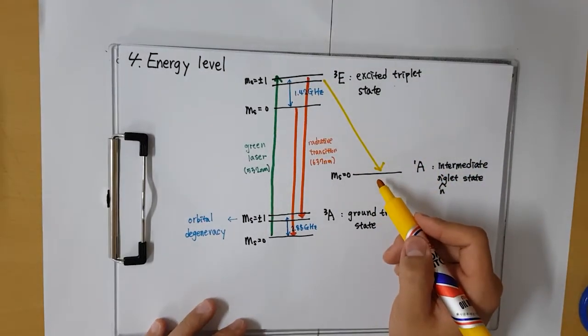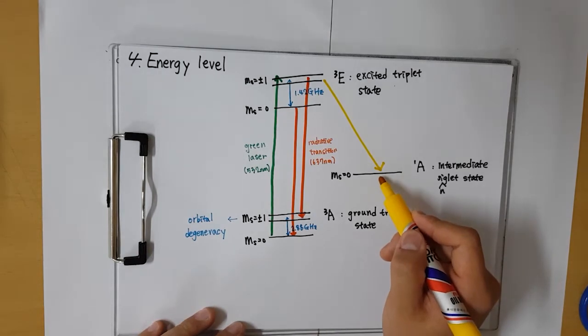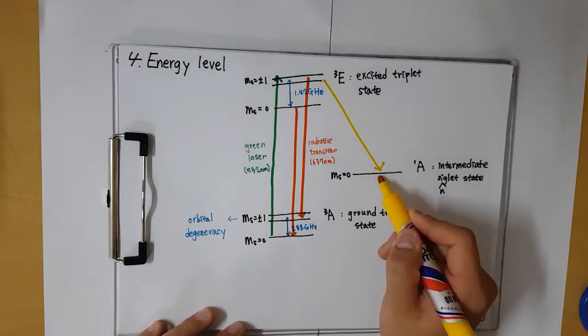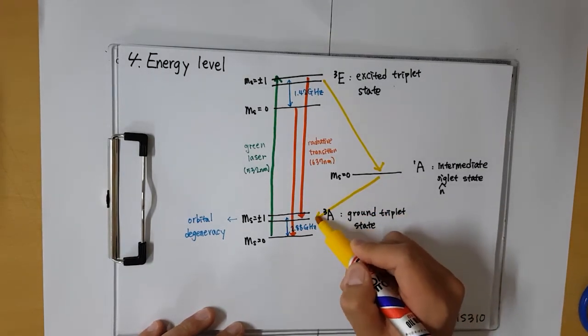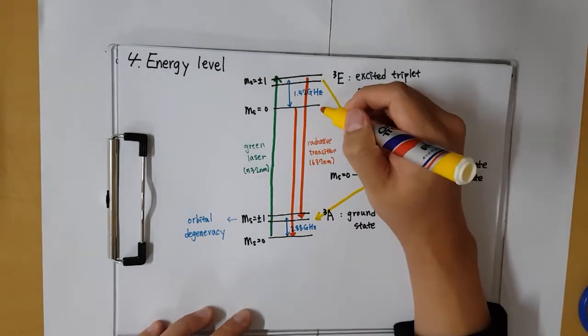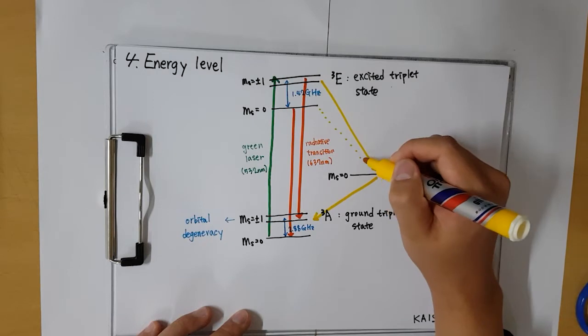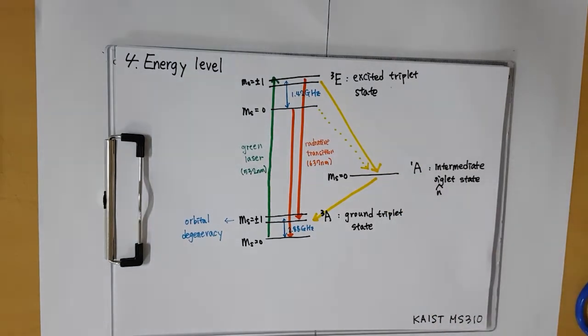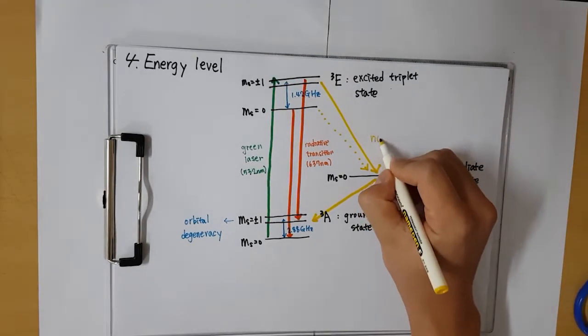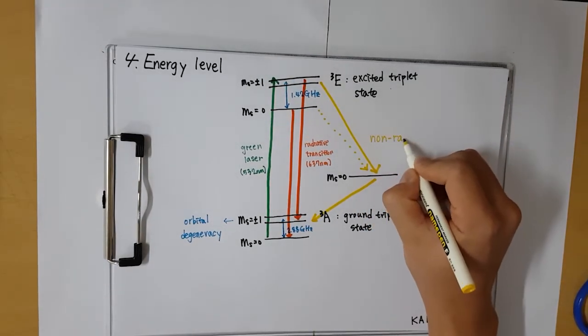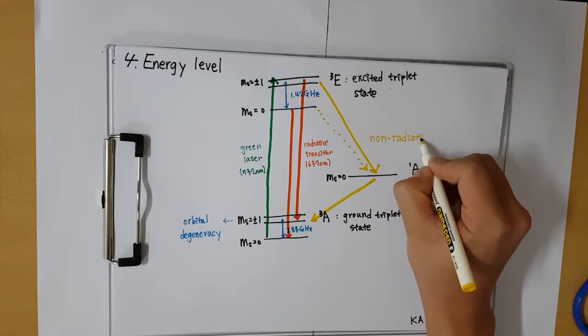The energy curve in the function of position of the atom for the excited ms plus minus 1 state intersects the curve for the singlet A state. So, it's possible for the spin to flip with little or no energy required in the transition. This also can be applied for the excited ms0 state to singlet A state.